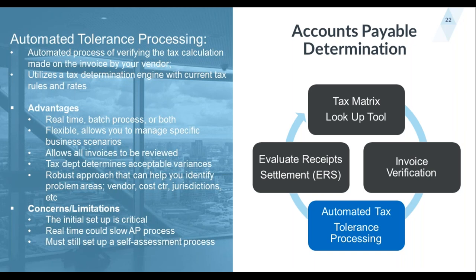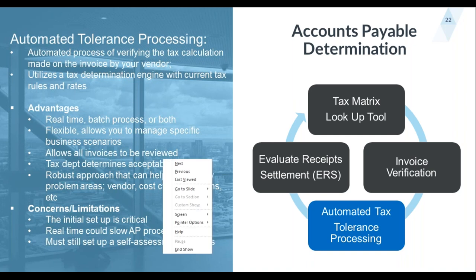If you do real time, it could slow the AP process — inserting a step into the AP process real time could slow things down. You still have to set up a self-assessment process: once you realize your vendor didn't charge you correctly, you need to self-assess this tax and make sure it gets accrued properly. Purchasing organizations' goal is to get invoices paid quickly and on time. If you're stopping invoices that maybe shouldn't be paid, there could be a slowdown in the AP group's work, potentially meaning you've missed out on discounts.